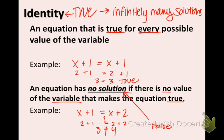So just a little recap, true statement points to identity, and that means there are infinitely many solutions. That means every number works. And the opposite of that would be no solution, and that happens when you get a false statement. So no number works.